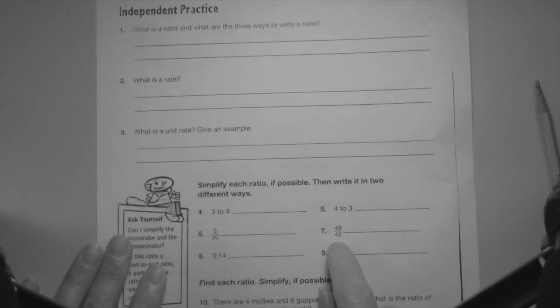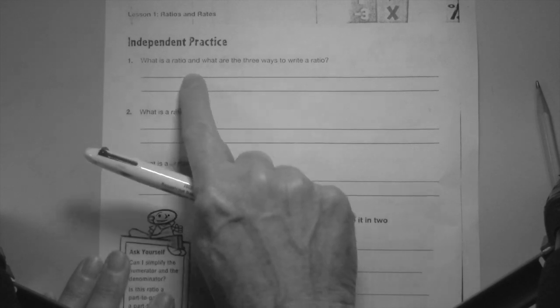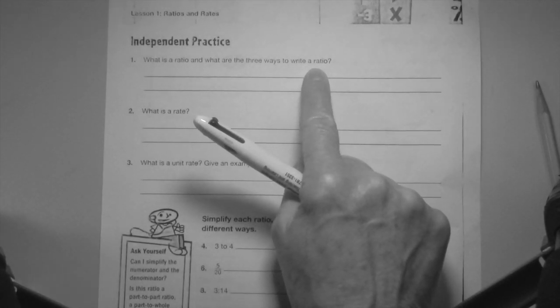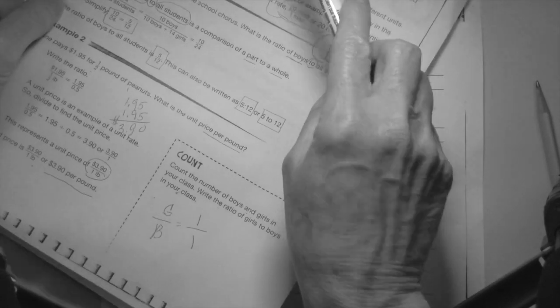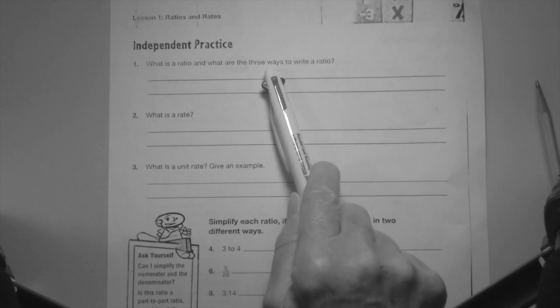Next page, independent practice. Independent practice is just that, you're supposed to write this. What is the ratio and what are the three ways to write the ratio? Go back to the first page, it's right there, ratios and rates, definitions right there. You're going to rewrite that definition up here.